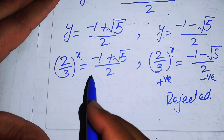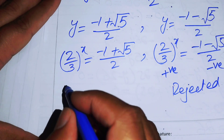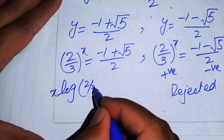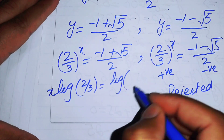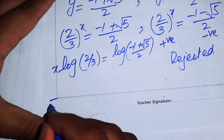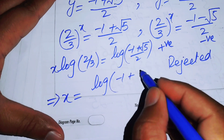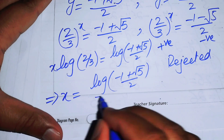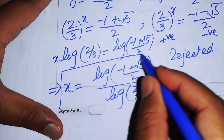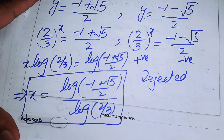For the valid case, we take the logarithm on both sides. It becomes x times log(2/3) equals log((minus 1 plus √5)/2). Moving the log term to the right-hand side, the value of x equals log((minus 1 plus √5)/2) divided by log(2/3). This is our final answer. Thank you so much for watching this video — please subscribe to my channel for more exciting videos.